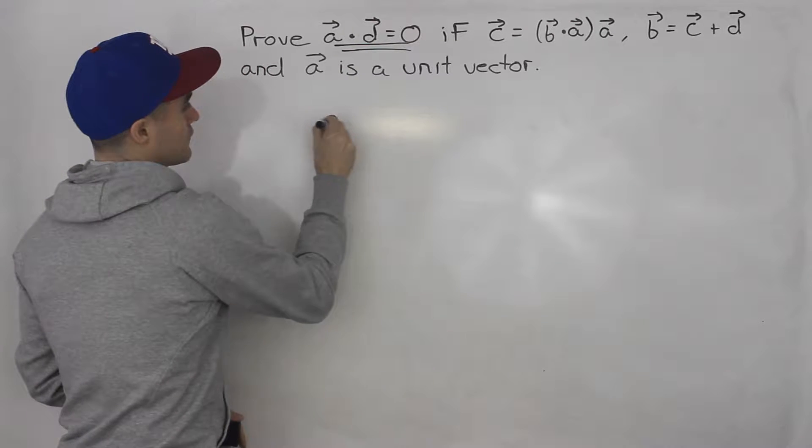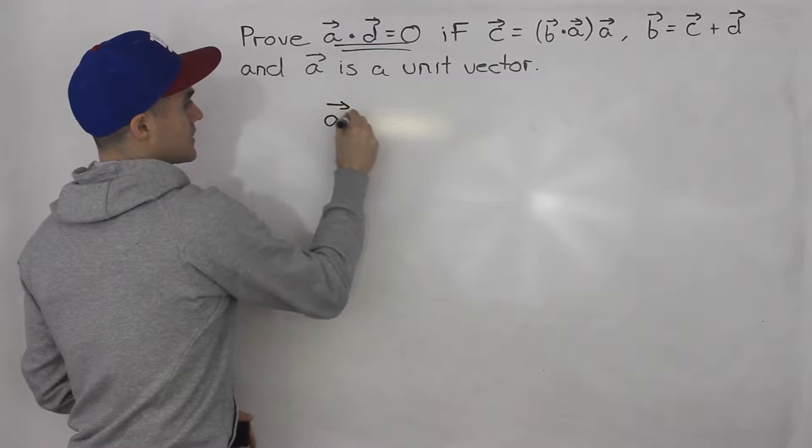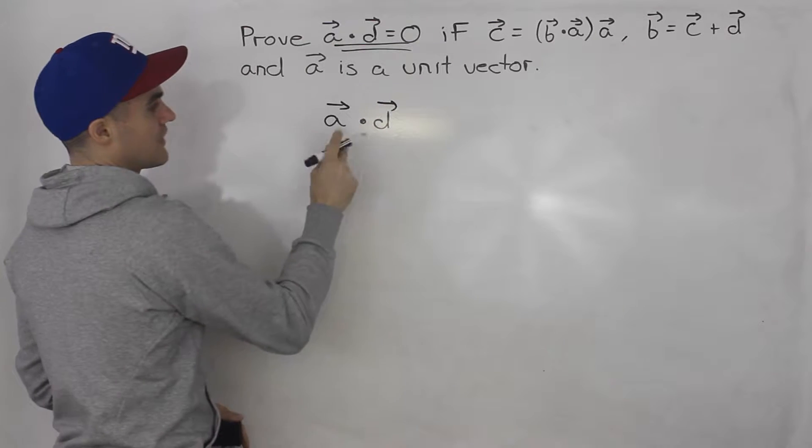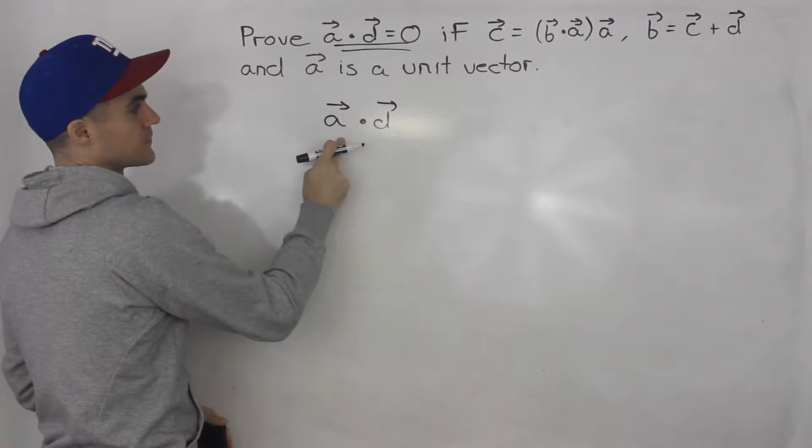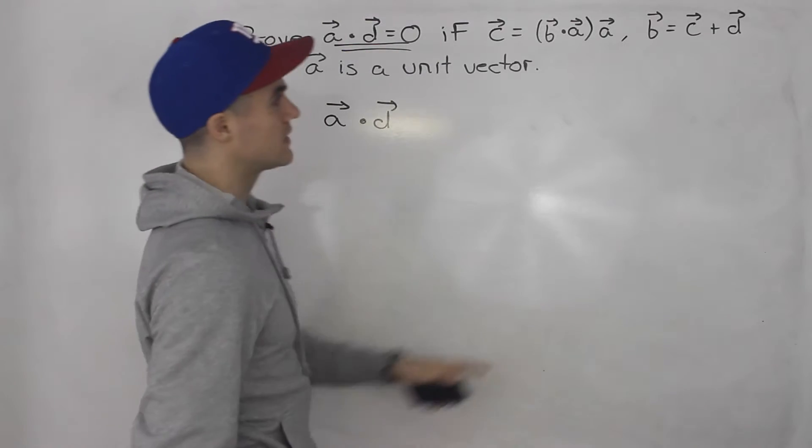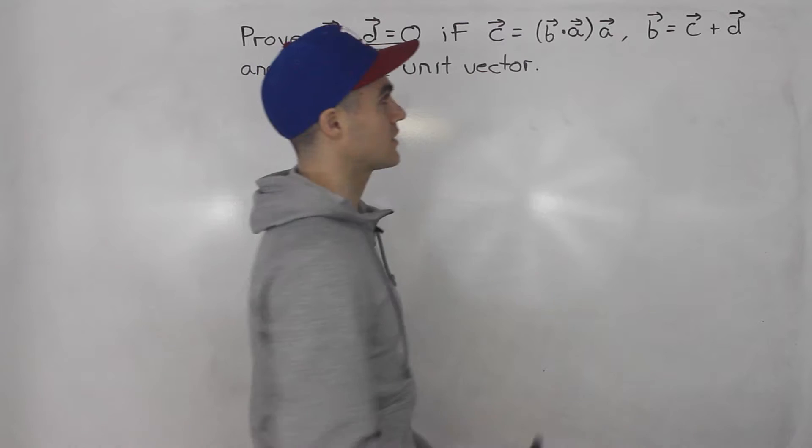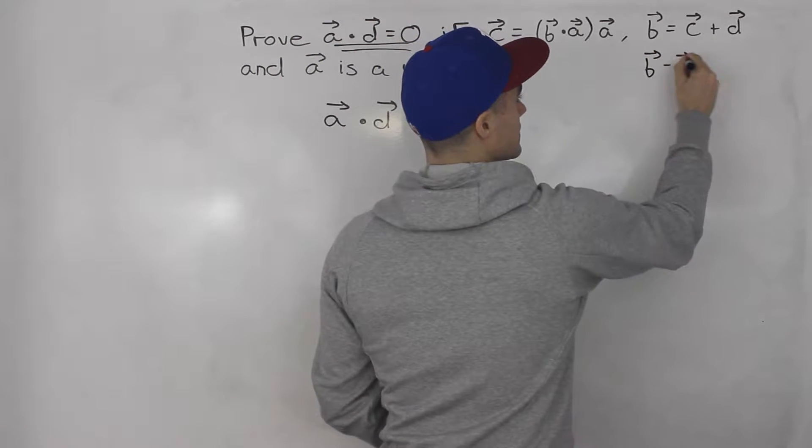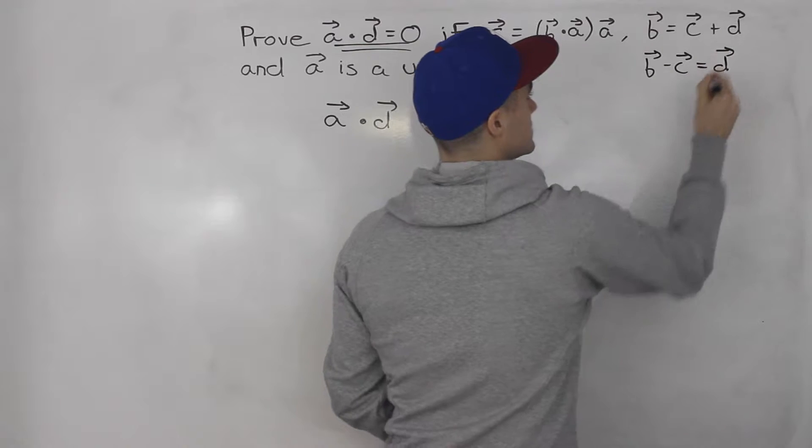So what I'm going to do is I'm first going to work with that left side. So we got a dot vector d, and we have to prove that that's going to equal zero somehow. So notice that vector d, we can isolate with this equation here.